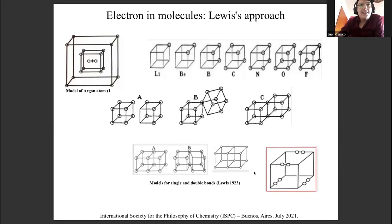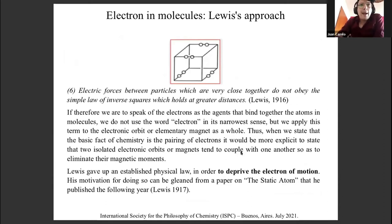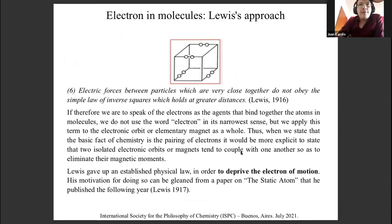In Lewis's 1916 theory only part of the atom was involved in chemical phenomena. There was an inner core surrounded by shell electrons. But in order to have this configuration, the electrons at small distances could not interact via Coulomb's law. So in his axiomatic description of the theory of atomic structure, in his sixth postulate, he says very clearly that electric forces between particles which are very close together do not obey the simple law of inverse squares which holds at greater distances. He was essentially denying an established physical law in order to deprive the electron of motion.